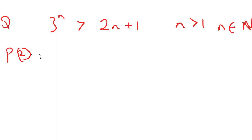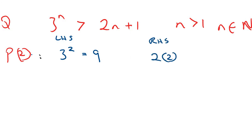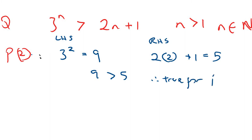We start by testing the base case n = 2. The left-hand side gives 3² = 9, and the right-hand side gives 2(2) + 1 = 5. Since 9 > 5, the statement is true for the first case n = 2.